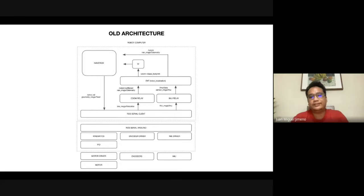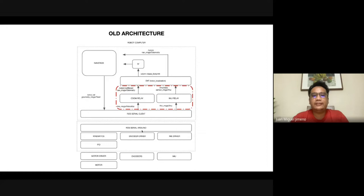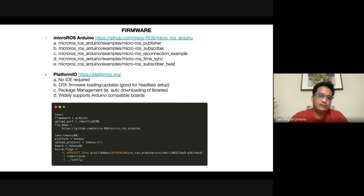Compared to the previous version, the main difference is that previously I had to create relay nodes — running on raw serial with very lightweight messages — that sent data to the robot computer, which then reconstructed them into full ROS messages. The reason was that odometry and sensor messages were too big for the Arduino and the ROS serial client to handle, hence those relay nodes running on the robot computer. Now with micro-ROS, that's no longer necessary.